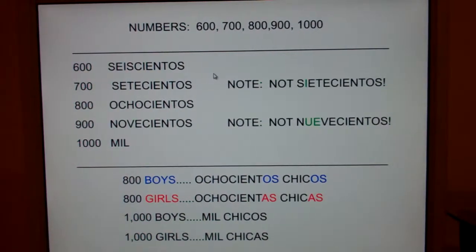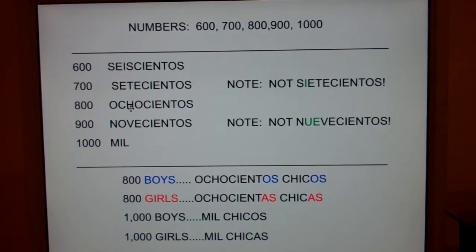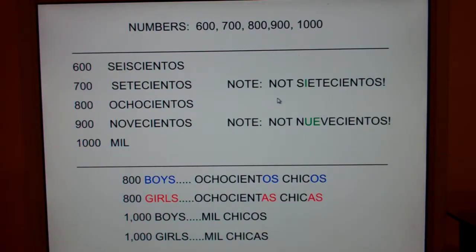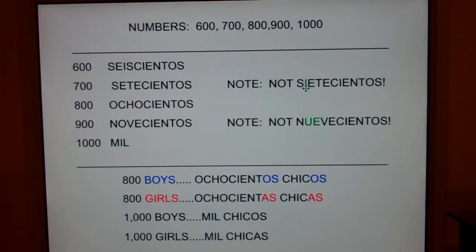Now, following the pattern from 100 to 500, it's just 600s, 800s. But these two are tricky — 700 and 900 are tricky, which makes sense. Because remember, 70 shortened down to 70, and 90 shortened down to 90. So just be careful with 700 and 900. It's not 700, it's 700 — that 'i' disappears.